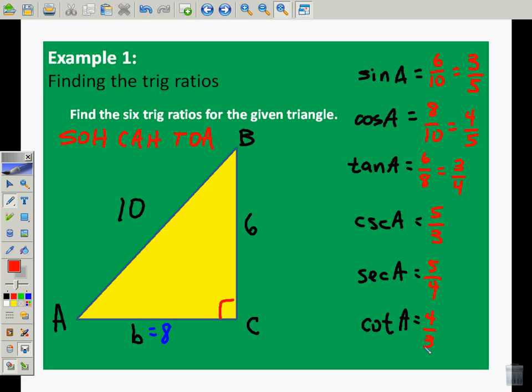Okay? So, that's the basics of trig ratios. So, you can find the 6 trig ratios for any acute angle in a right triangle. Thanks for watching.